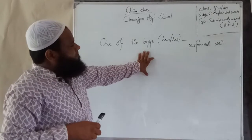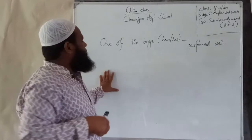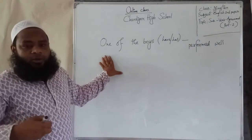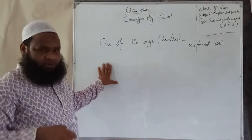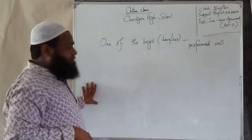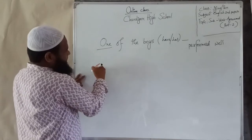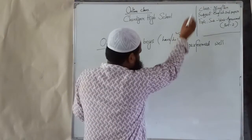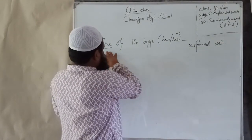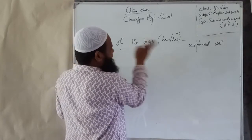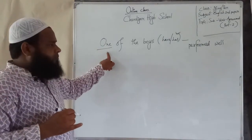Here: 'One of the boys — have or has' — which one will be selected? You will have to find the head word, the main subject. As I discussed in the previous class, the head word is found before the first preposition. Here 'one' is the head word — the main subject. According to the rule, if the subject is singular, the verb will be 'has'; if the head word is plural, the verb will be 'have.' Since 'one' is third person singular, the answer will be 'has.'